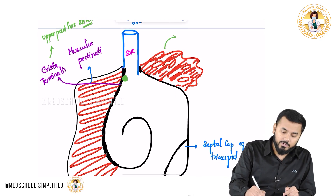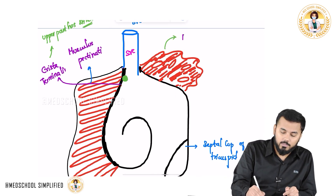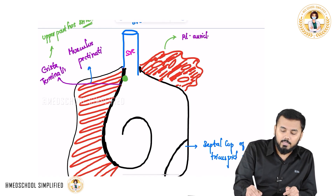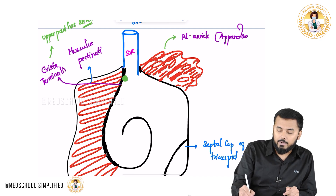This part over here is called as your right auricle — the extra outgrowth which is also called as the appendage.